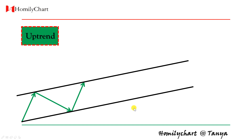The price movement is supposed to be within the channel. The upper line has resistance and the lower line has support. Once the price hits the upper line, it meets resistance and will turn downwards. And once the price hits the lower line, it gets support, so the price will turn upwards.